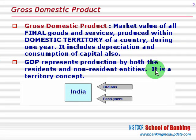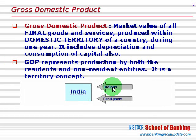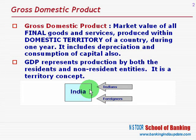Let us see this graph. Here we have a country called India. In the domestic territory of India, whatever is being produced by residents — that is, Indians — or whatever is produced by non-residents — that is, foreigners — is taken into consideration so far as GDP is concerned. So GDP covers the market value of final goods and services produced within the domestic territory of a country.